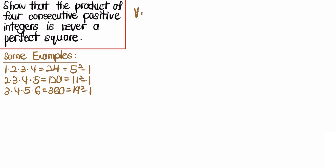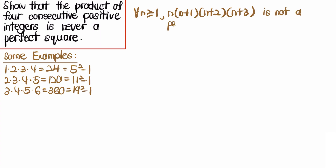Having said that, we'll rephrase the problem by showing that for all n ≥ 1, n × (n+1) × (n+2) × (n+3) is not a perfect square. To show that this is true, there are actually two ways, and both use a common trick which is to look at the symmetry of this expression.